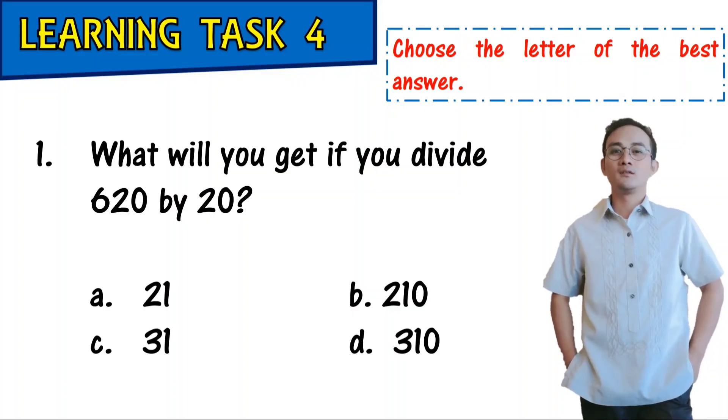Choose the letter of the best answer. What will you get if you divide 620 by 20? A, 21. B, 210. C, 31. D, 310.